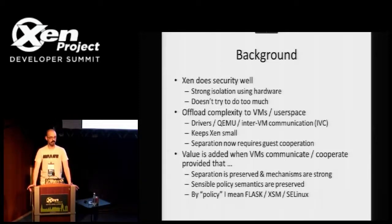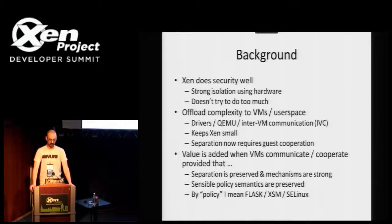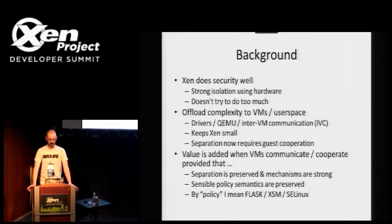Anyone who's done work in security specifically in the government space will know that requirement number one is to make sure that data never moves between VMs, and requirement number two is to make sure they can communicate and do something useful. These are obviously at odds — as security is in all these things. Xen has interesting properties that allow us to do this with a policy that actually defines the way things can communicate. Having a formally stated security policy is very important, and I'll make a particularly strong point throughout this talk about the concept of policy semantics and preserving those semantics across changes to the system.